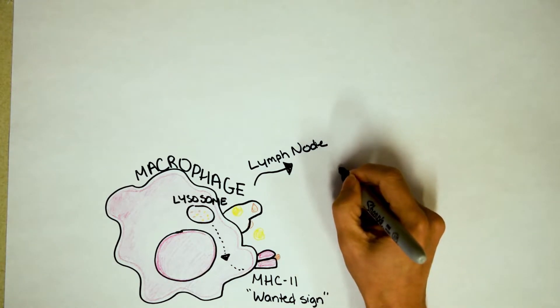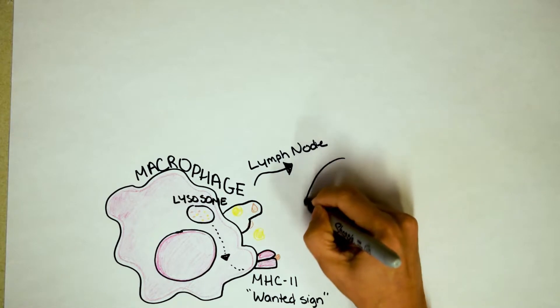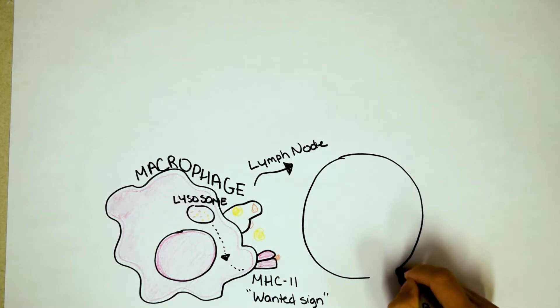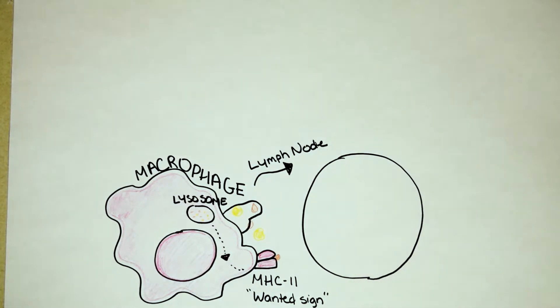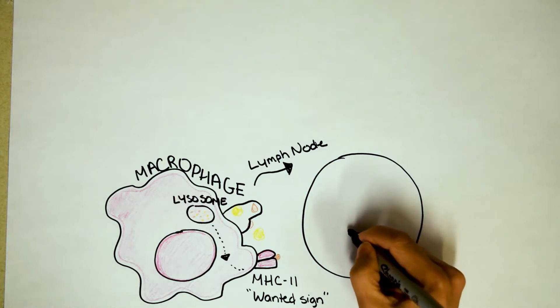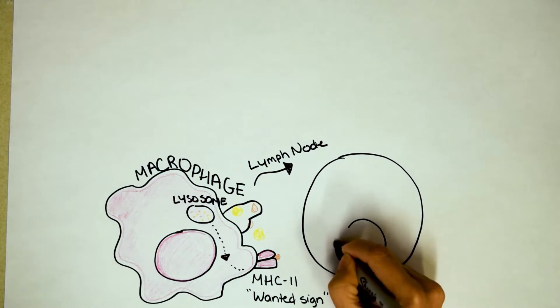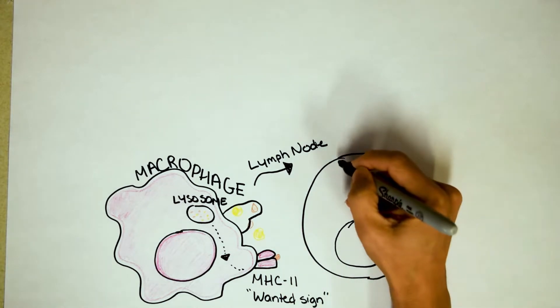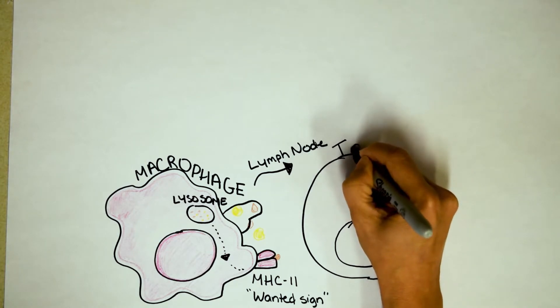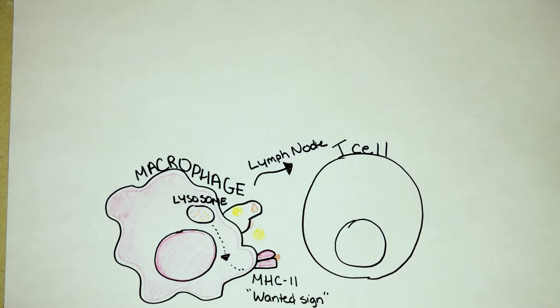Alright, I'm going to draw a T cell. Most of your lymph nodes are actually located in places like behind your knees, your armpits, your neck, your groin. So depending on where the macrophage found this, it may have to travel a little ways. Alright, so here is our T cell.